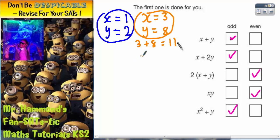x plus 2y would be 3 plus 2 lots of 8. Well, 2 lots of 8 is 16. And when you add 3 onto that, you get 19. And 19 is still odd. So the second statement works.